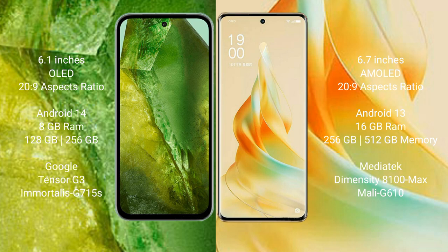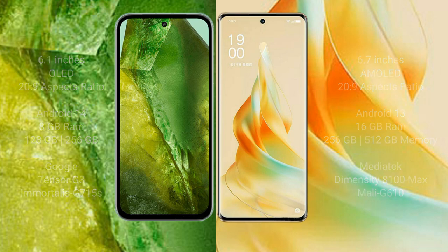Google Pixel 8a comes with 8GB RAM and 128GB to 256GB internal storage, Google Tensor G3 processor and GPU Mali-G715A. OPPO Reno 9 Pro comes with 16GB RAM and 256GB or 512GB internal storage, MediaTek Dimensity 8100 Max processor and GPU Mali-G610.